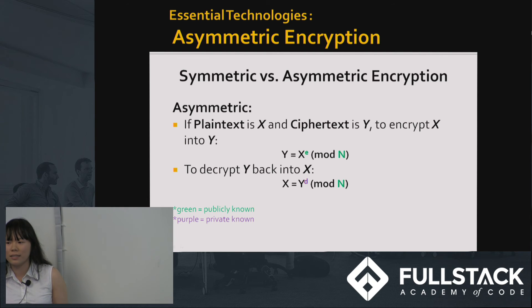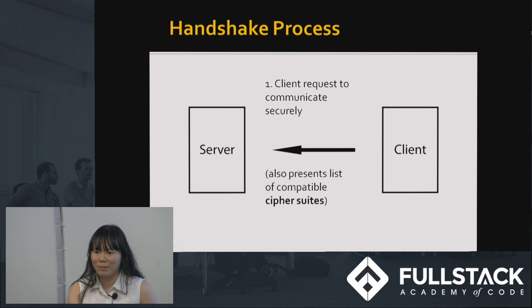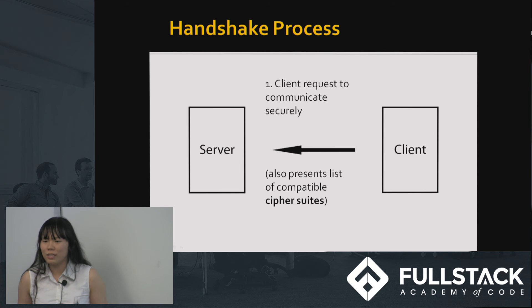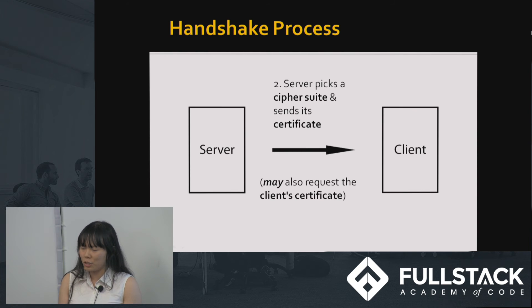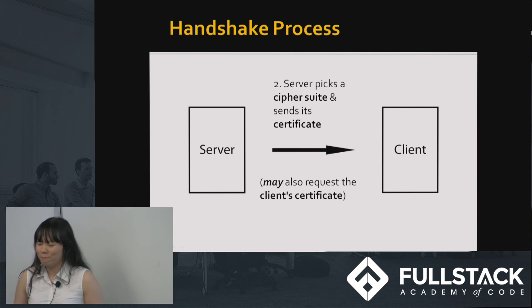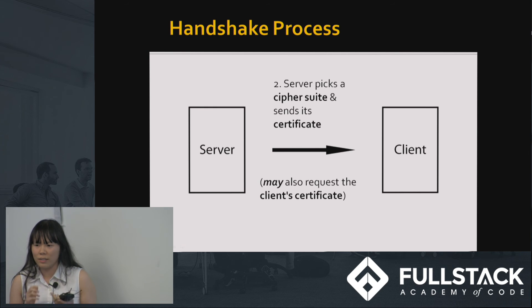The actual handshake process using these technologies usually starts with a client's request to communicate securely. For example, if you guys are a bank, I'm going to first insecurely ask 'can we do a secure connection of some sort?' and I will give you a list of compatible cipher suites or methods that we can use together. Then the bank will pick a cipher suite and send me their certificate, which guarantees it's not Karen pretending to be my bank. They might also ask for my client's certificate — Diffie-Hellman actually requires two sets of private and public keys, whereas RSA requires one set.